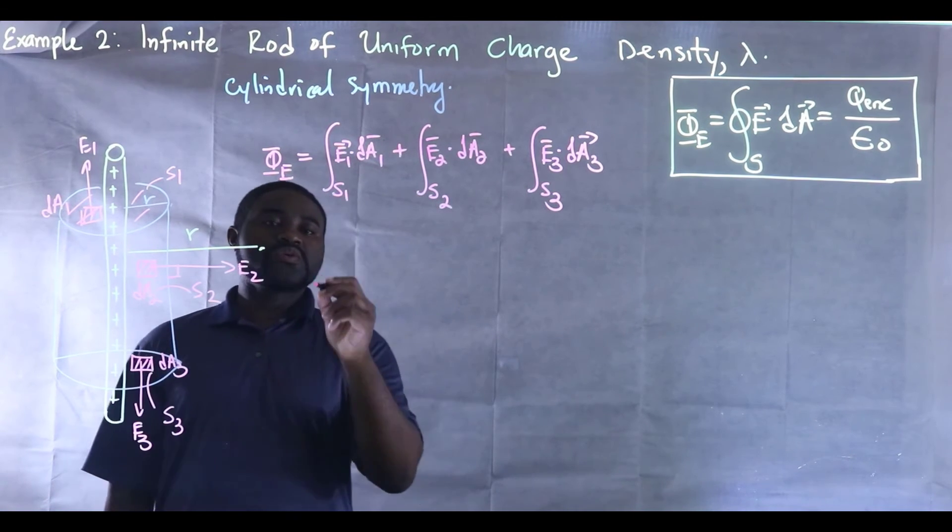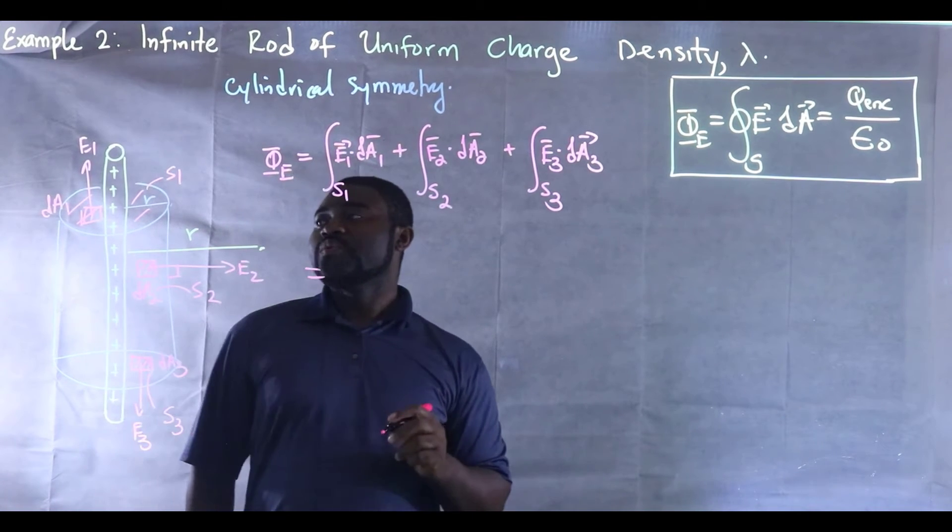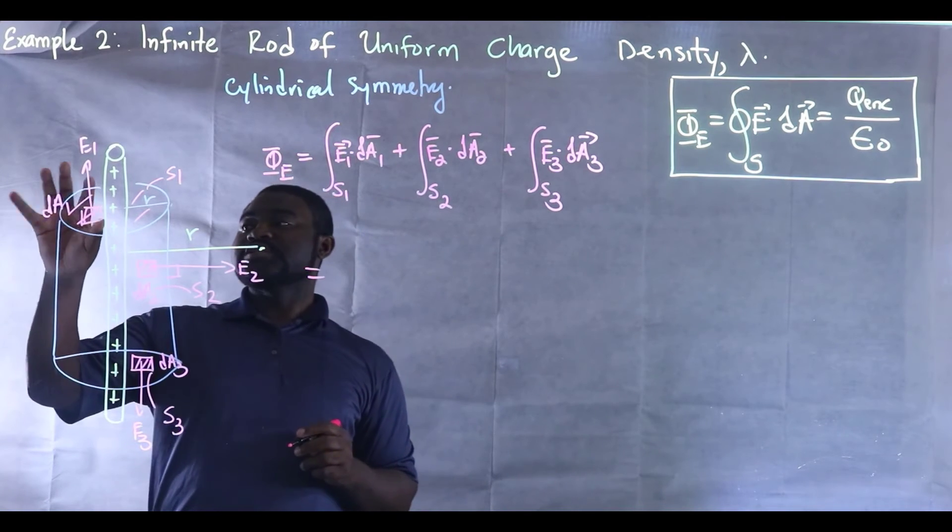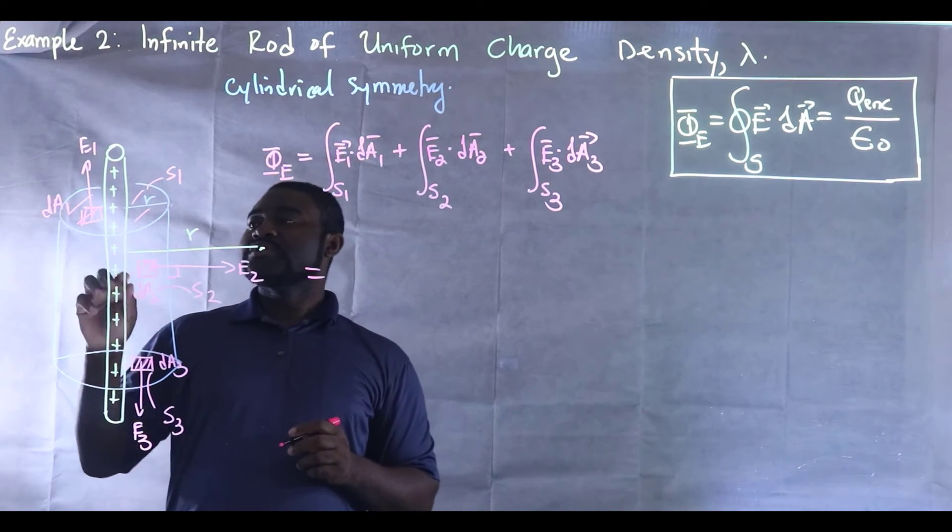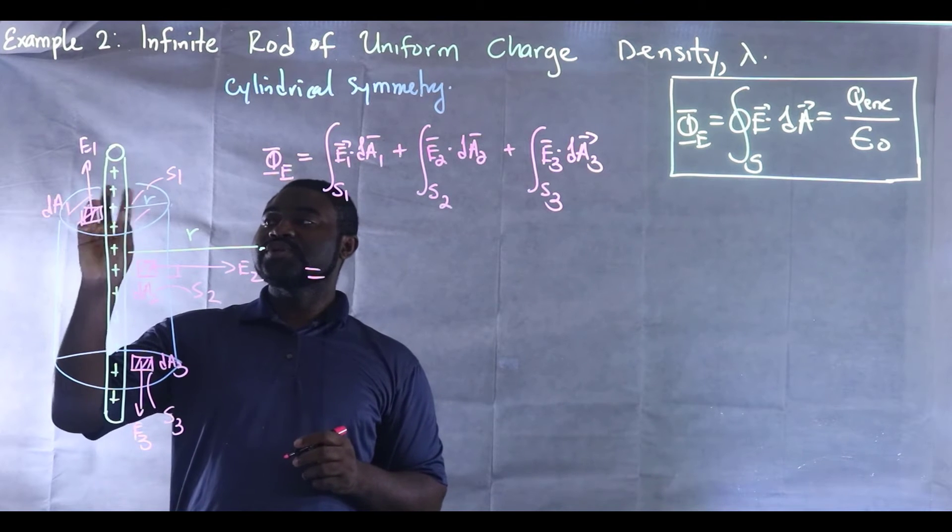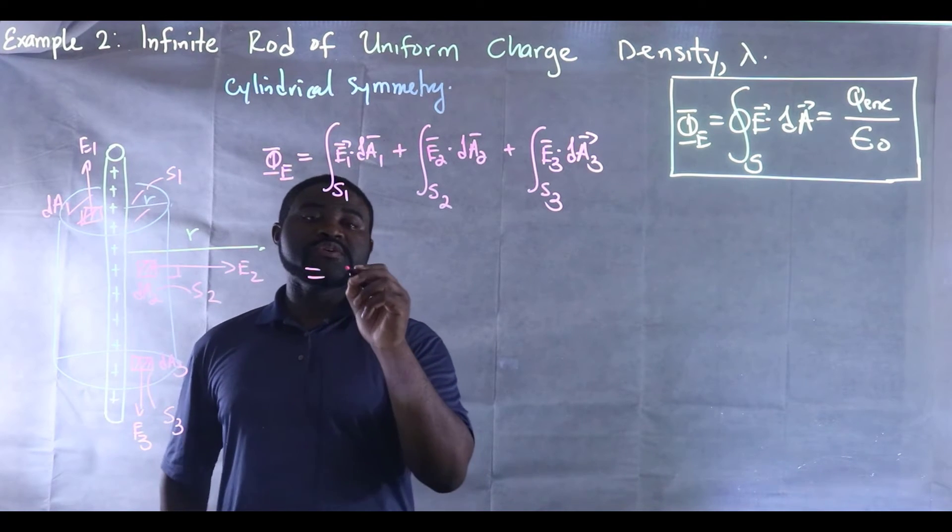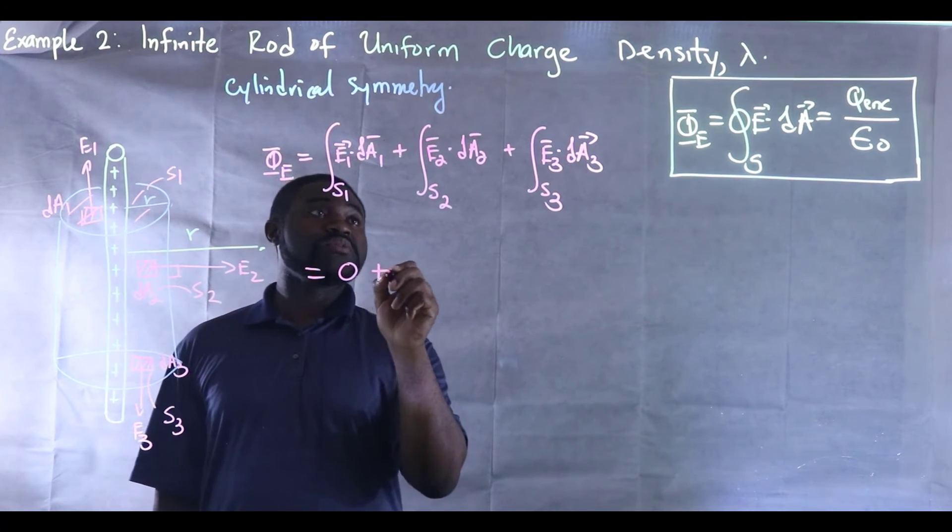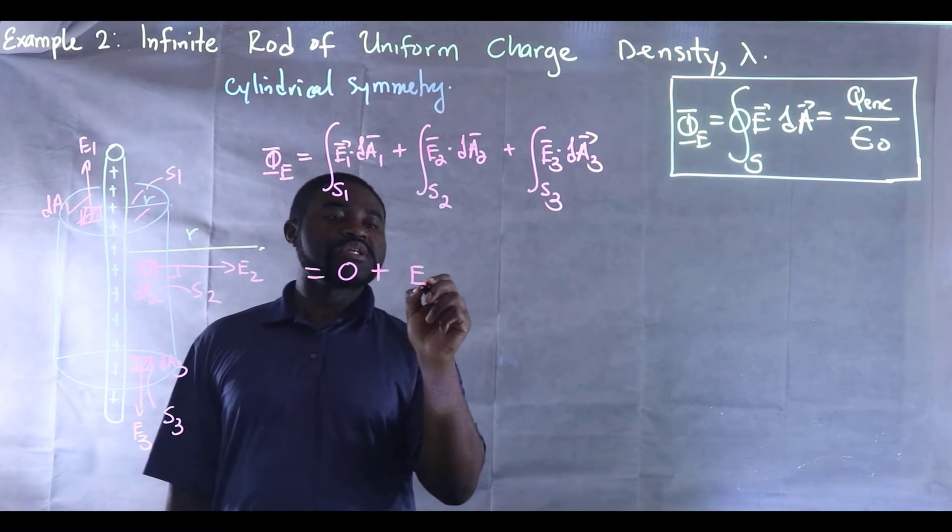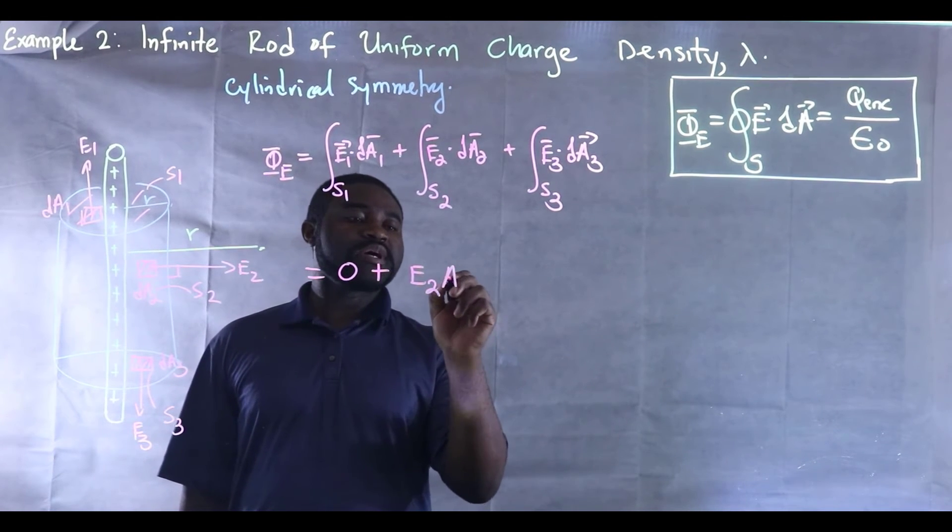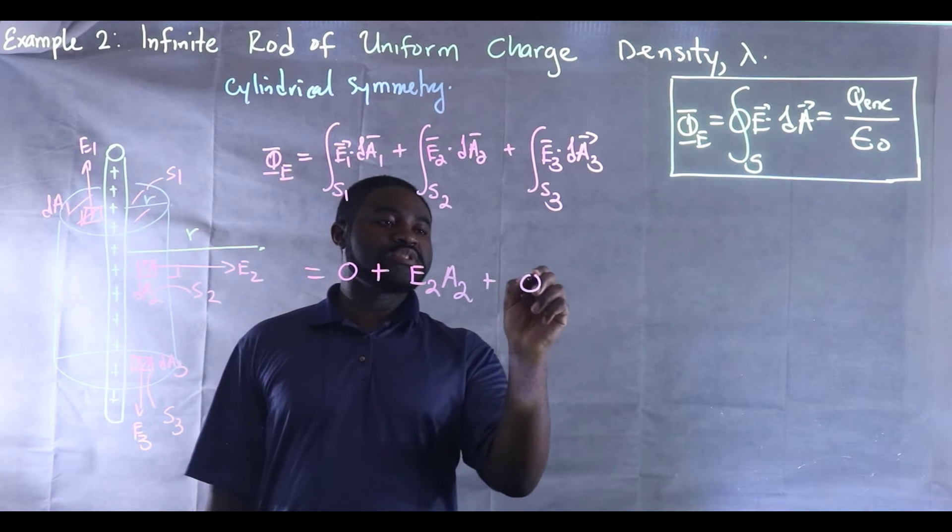Now we know that the field here is parallel to the surface, so the electric flux through this particular surface will be zero. So this is zero plus E2 multiplied by A2 plus zero.